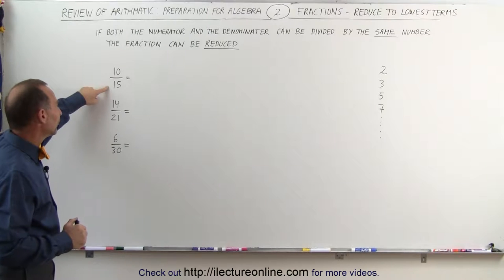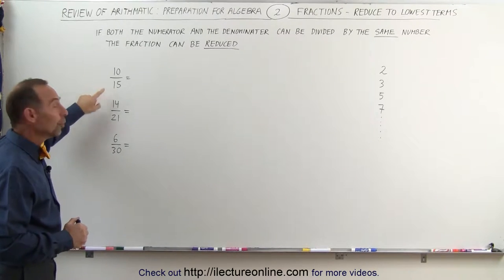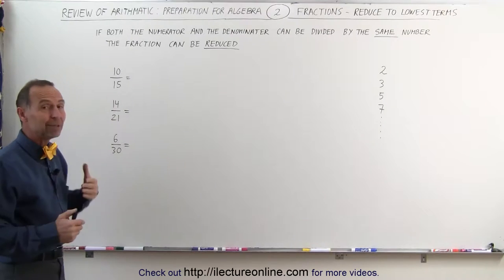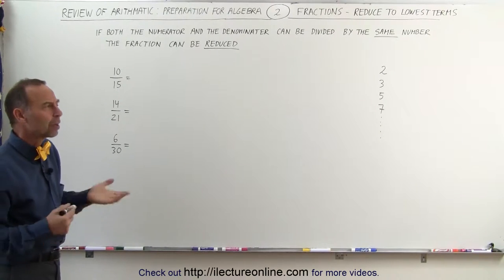For example, 10 over 15 or 10 fifteenths. Notice that both the numerator and the denominator can be divided by five. How do we know that?